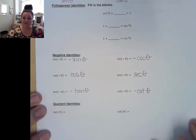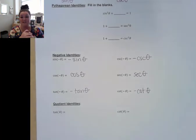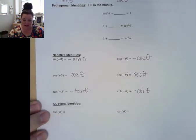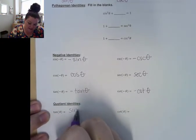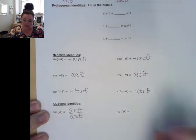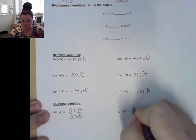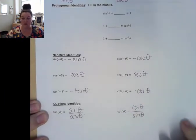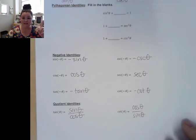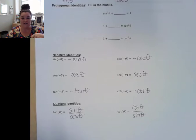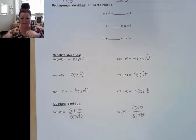Our quotient identities is just writing tangent and cotangent in terms of sine and cosine. Tangent is y over x, which is sine theta over cosine theta. And cotangent is cosine theta over sine theta. So hopefully the reciprocal identities, the negative identities, and the quotient identities are all identities that you can crank out relatively quickly.